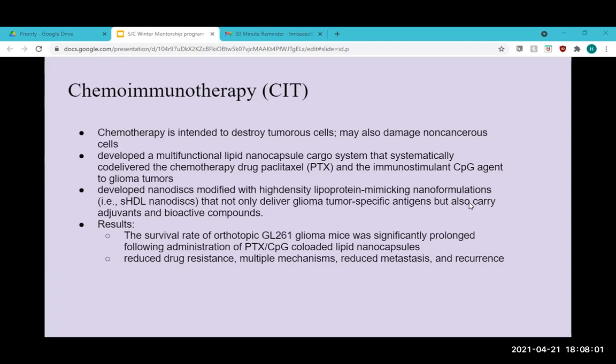For this treatment, they made something called a lipid nanocapsule cargo system, which was basically a way to provide a clear path to the site of the tumor when the treatment was injected. This cargo system contained the chemotherapy drug and an immunostimulant to the site of the tumor. I also mentioned earlier how the blood-brain barrier has a very strong defense. In order to combat that, they developed these nanodiscs, which are supposed to mimic tumor antigens, so that the drug can pass along the cargo system without the brain destroying it.